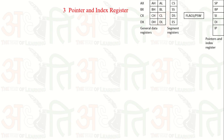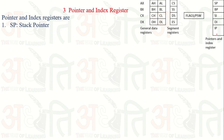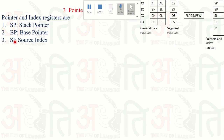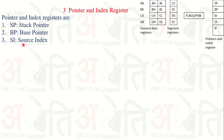Similarly, the pointer and index registers include SP (Stack Pointer), BP (Base Pointer), SI (Source Index), DI (Destination Index), and IP (Instruction Pointer). There are three pointer registers — Stack Pointer, Base Pointer, and Instruction Pointer — and two index registers — Source Index and Destination Index.